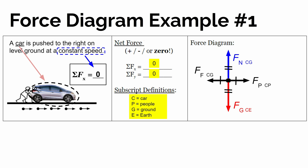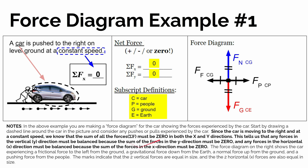So when you guys go through and make force diagrams in your homework assignment, this is the way that you're going to do it. You're going to identify the sum of the forces in the x and y direction — horizontal and vertical — label all your subscript definitions, then make your force diagram to explain what's true of the forces on the object and why it's moving the way that it is. There are some notes below if you want to read a summary of what we just talked about.